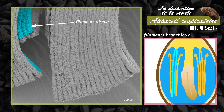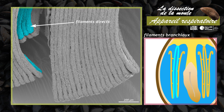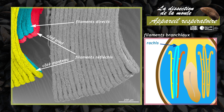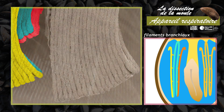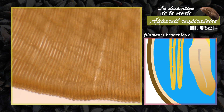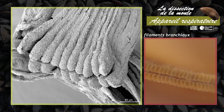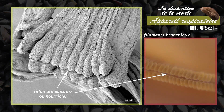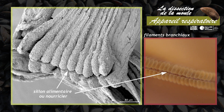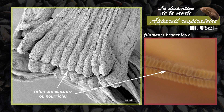Les filaments directs, au centre, sont reliés au rachis. Les filaments réfléchis sont orientés vers le pied ou le manteau. Les filaments branchiaux sont repliés dans leur milieu. L'ensemble de ces coudes forme une gouttière ciliée, le sillon alimentaire ou nourricier, qui permet de diriger les particules alimentaires vers la bouche.